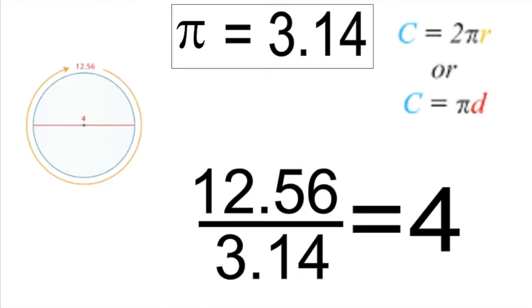If I'm given a circumference and I want to find the diameter, I would divide it by pi to get the diameter by itself using the inverse operation of multiplication. So if I knew my circumference was 12 and 56 hundredths, and I divide that by 3.14, it would give me my diameter of 4 or a radius of 2.